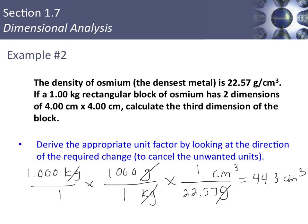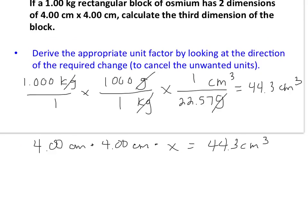But that's not the final question — we want the third dimension of the block, given the two other dimensions as 4 by 4 centimeters. The volume of a rectangular block is length times width times height, so 4 times 4 times x equals our volume. Solving for x gives us 2.77 centimeters. I used three significant figures because all numbers in the problem had three significant figures.